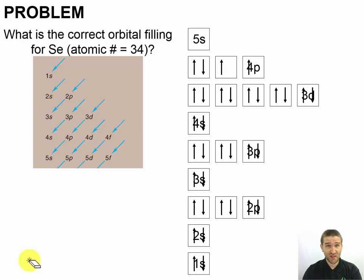Okay, so our condensed electron configuration is just going to be a very compressed version of what we see there. We're going to have our 1s², 2s², 2p⁶, 3s², 3p⁶, 4s², 3d¹⁰, and 4p⁴.